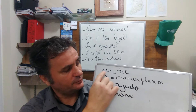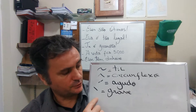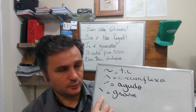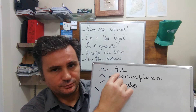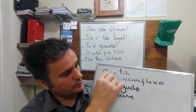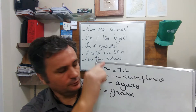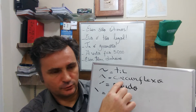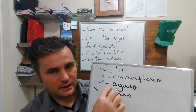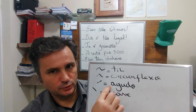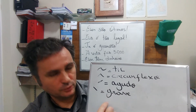So, we have these little guys here that show where the stressed syllable is in Portuguese, in a word. The first one is TIL — this little worm. The next one is this little roof, acento circunflexo. Then this little arrow, agudo — acento agudo. And this one to the opposite side, acento grave.